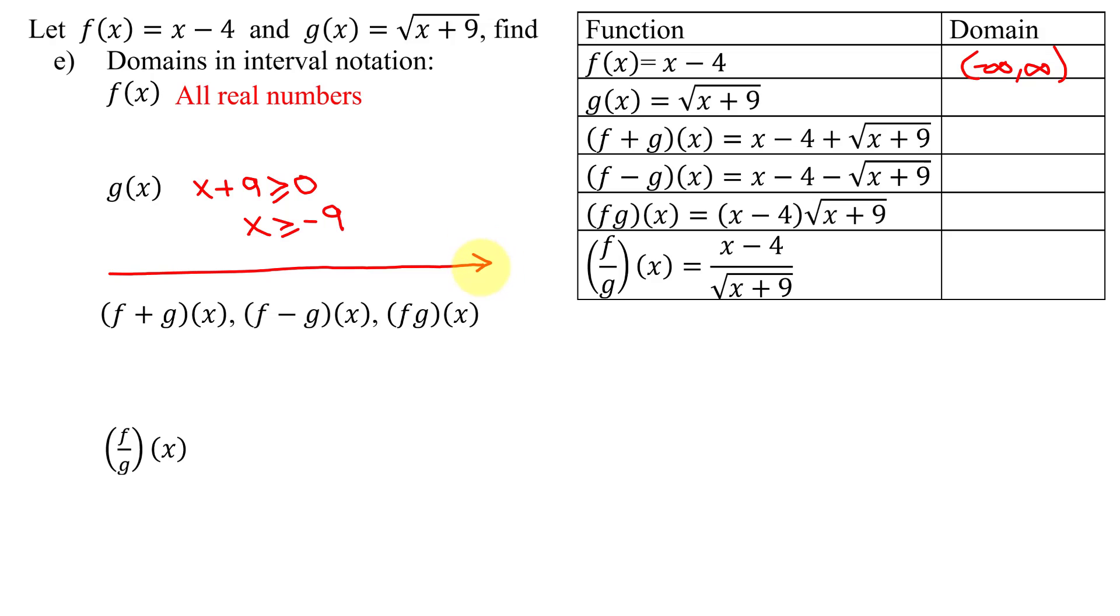Graphing that on the number line, here's negative 9. And it's greater than or equal to, shade to the right. Since it includes the negative 9, put a square bracket on the negative 9. But don't forget, this keeps going to positive infinity. So this domain in interval notation is negative 9 to infinity.